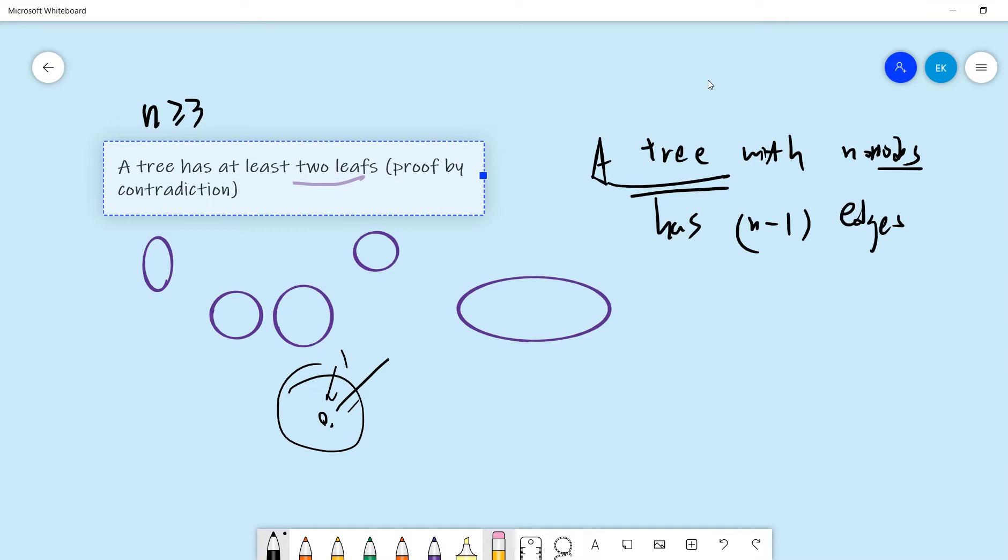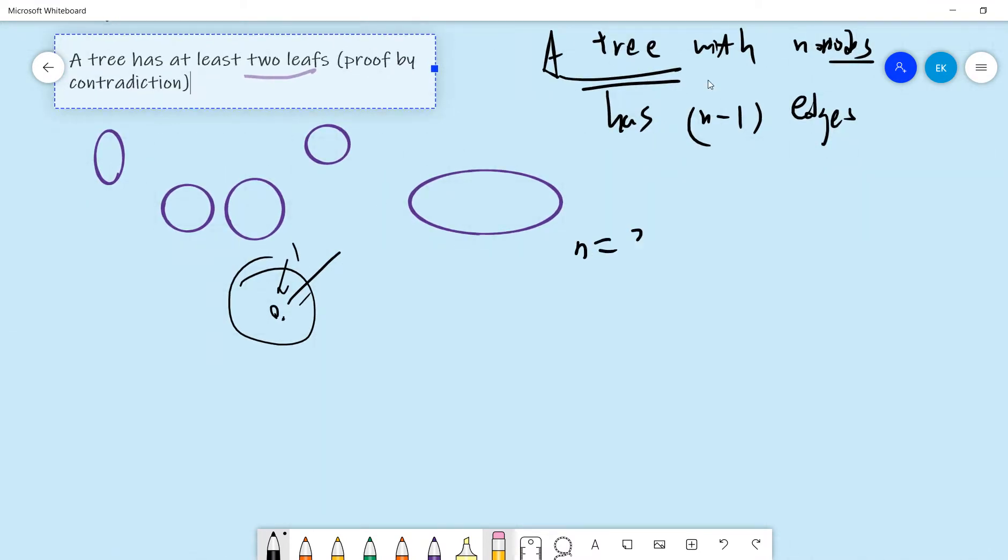For example, if n equals three, maybe you can draw like this, right? This is a tree and has two leaves, so you have at least two, right? And n equals four, you can also try this. So you can try for each one and you will see always at least two leaves.